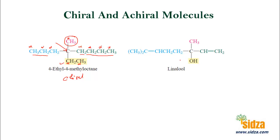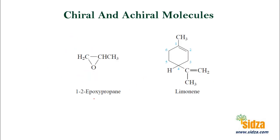Here is another molecule with four different groups — methyl, hydroxyl, and two others totally different — so this is a chiral molecule. Look at 1,2-epoxypropane. This carbon is not chiral because it has two similar atoms — hydrogens. What about the central carbon? This is chiral because it has a hydrogen, a methyl, and an OCH2 group from one side and a different group from the other side. So you can see this particular carbon has hydrogen, a methyl group, OCH2 from one side, and CH2O from the other side — different groups. So this is a chiral center, and the molecule is chiral.